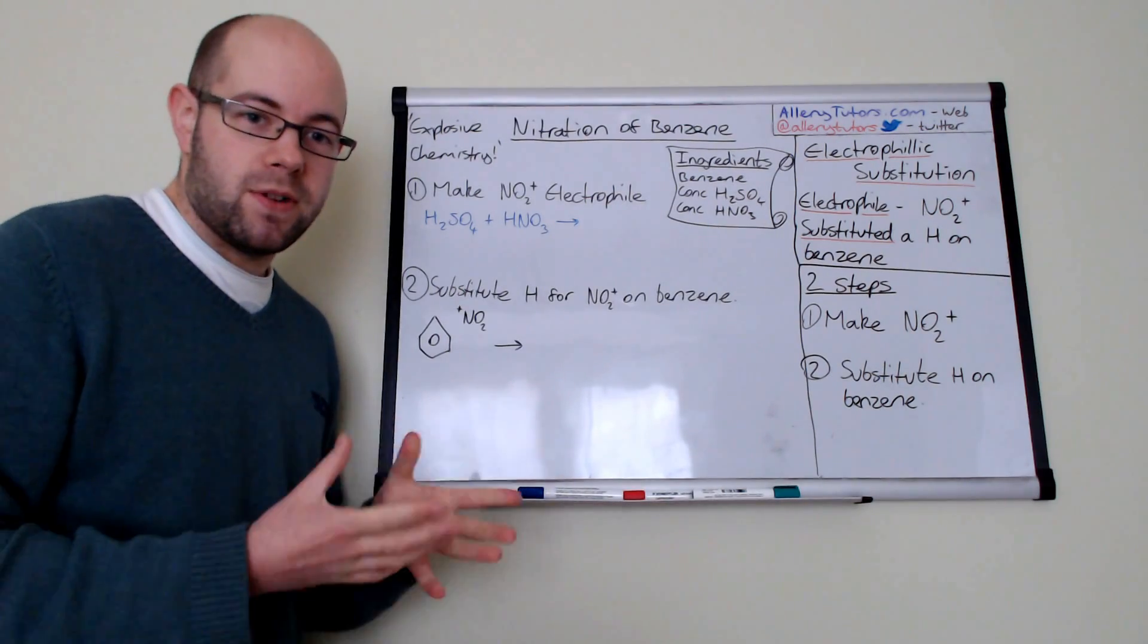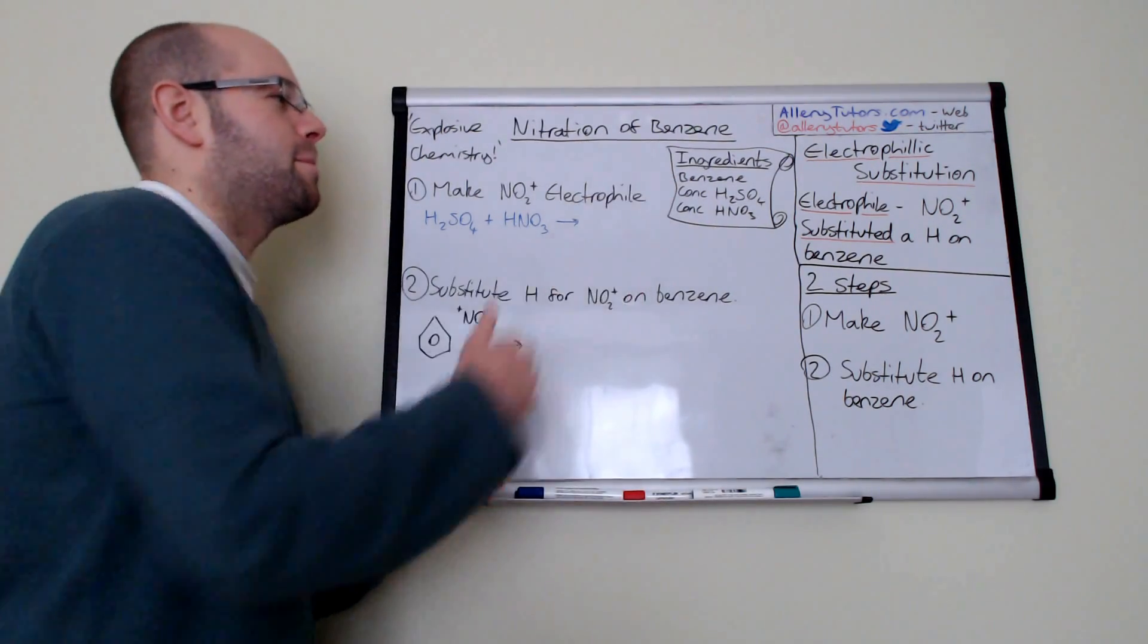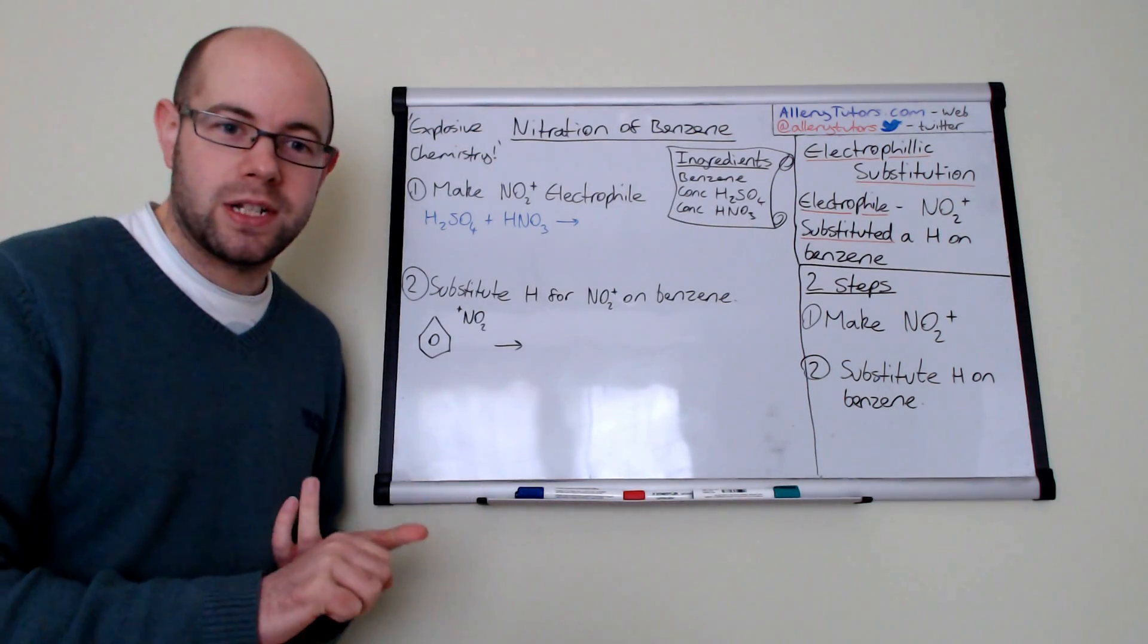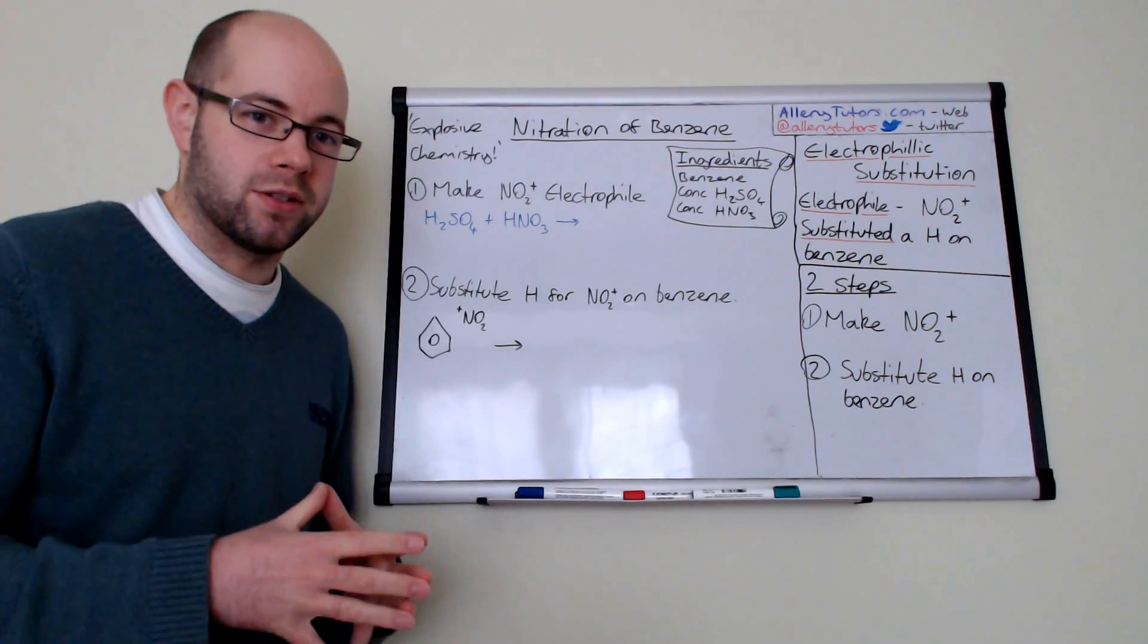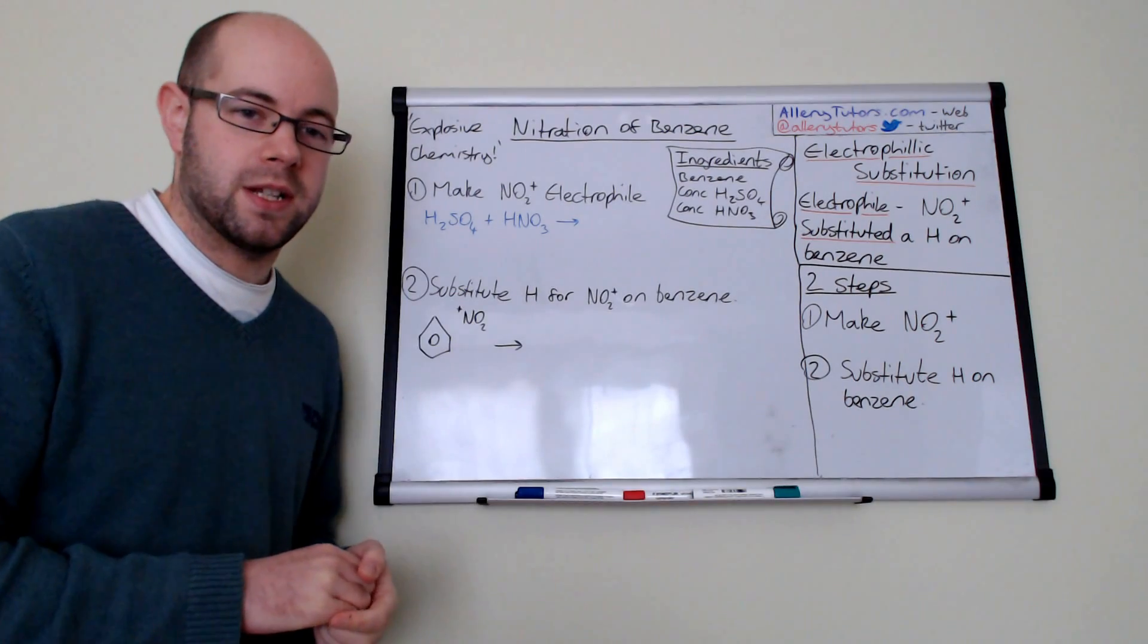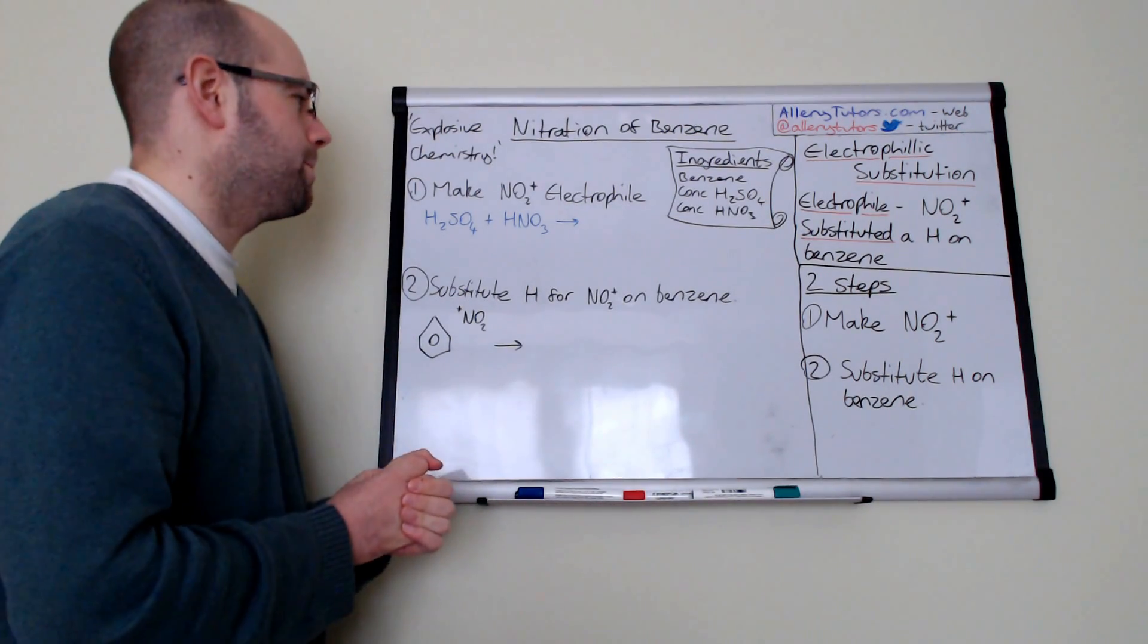The reagents we need are benzene, concentrated sulfuric acid, and concentrated nitric acid. It's very important that they've got to be concentrated. This doesn't work as well with dilutes, so be specific in the exam. Don't just put sulfuric and nitric, you've got to put concentrated as well.